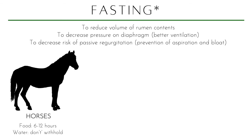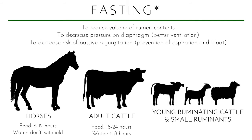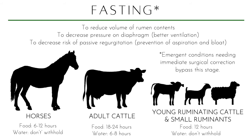For fasting durations: horses — 6 to 12 hours; do not withhold water. Adult cattle — food withheld 18 to 24 hours, water 6 to 8 hours. Young ruminant cattle and small ruminants — food 12 hours, water don't withhold. Of course, fasting does not apply for patients needing immediate surgical correction or emergent conditions — you go straight to surgery if needed.